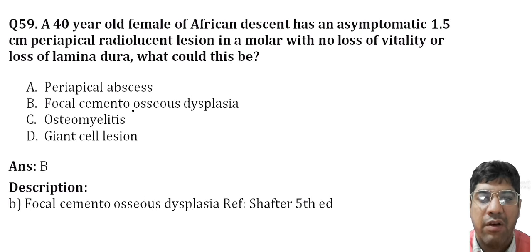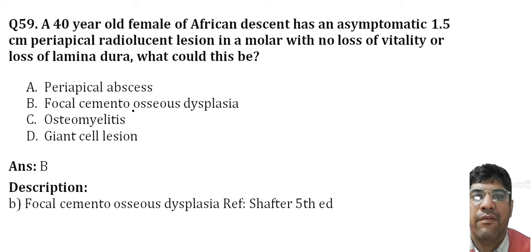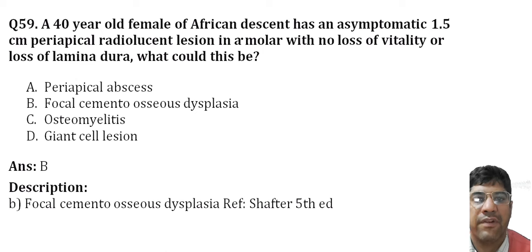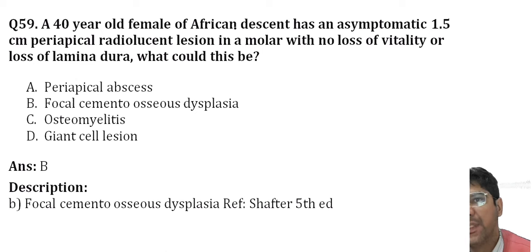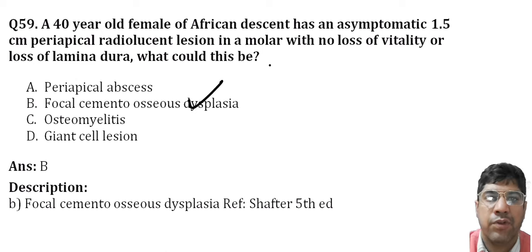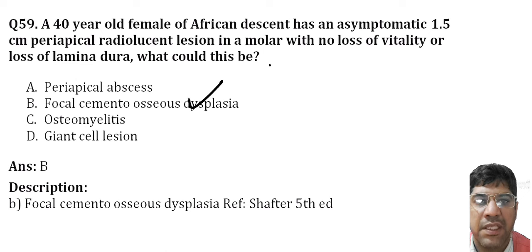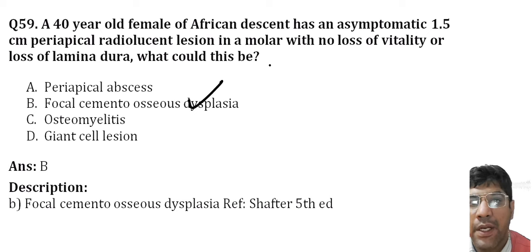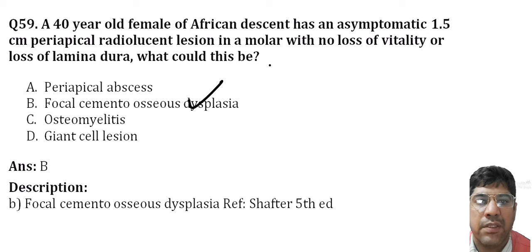A 40-year-old female of African descent with an asymptomatic 1.5 cm periapical radiolucent area in the molar with no loss of vitality or lamina dura could be due to focal cemento-osseous dysplasia. It is a benign fibro-osseous lesion affecting individuals of African descent, appearing radiopaque or radiolucent with poorly defined radiological borders on radiograph.